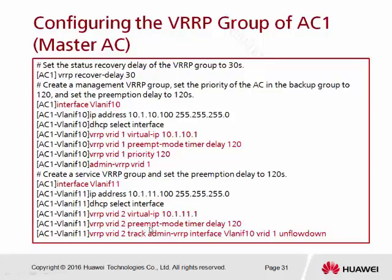Don't forget to set the query mode time delay. The most important part here is configuring the track admin VRP, because this is the service VLAN. VLAN 10 belongs to management, so to bind the service VLAN into the management, I use the command 'vrp vrid 2 track admin vrp interface vlan 10'. This binds VLAN 11 into VLAN 10, following virtual router ID 1, ending with 'unfollow down'.